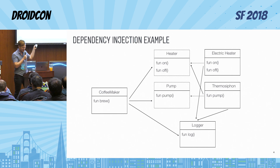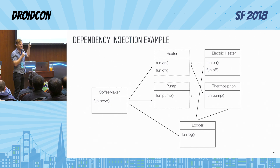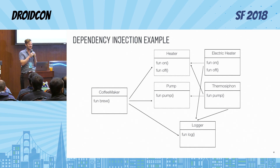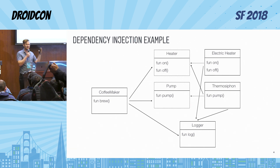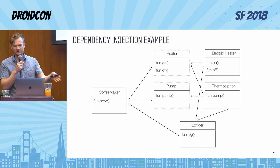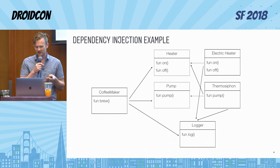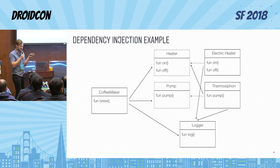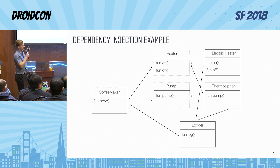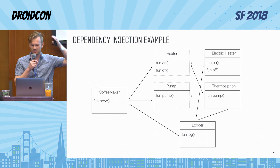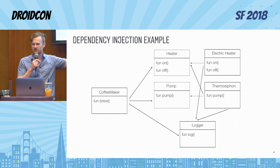You're probably familiar with the notorious coffee maker example. We have a coffee maker that depends on a heater and a pump, where heater and pump are actually interfaces and we have specific implementations for those. One complexity that exists here is that the pump implementation actually also depends on the heater, so the coffee maker and the pump somehow need to reuse the same instance of the heater.